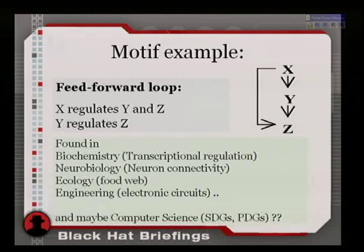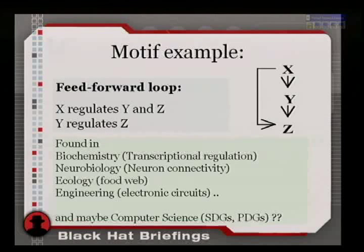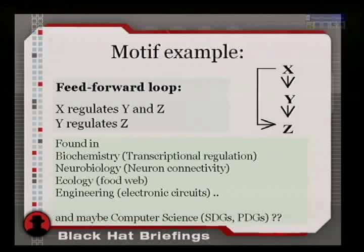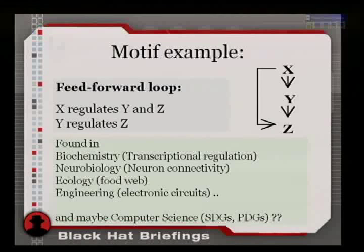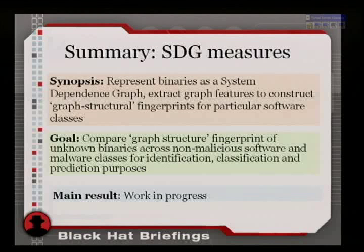An example is the feed-forward loop: X influences Y, Y influences Z, and X also influences Z. You find this in electrical circuits, biology, chemistry, ecology, and engineering — and who knows, you may find it in our research too. Finding motifs is a very hot topic; I'll show you references at the end.